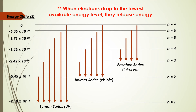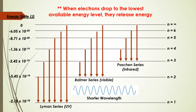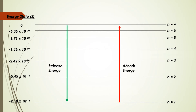The lower the energy level, the shorter the wavelength. For instance, the Lyman series has a shorter wavelength while the Paschen series has a longer wavelength. When dropping energy levels — for example from n=3 to n=1 — energy is being released. Conversely, if you are rising in energy levels from n=1 to n=3, then energy is being absorbed.